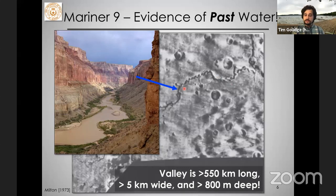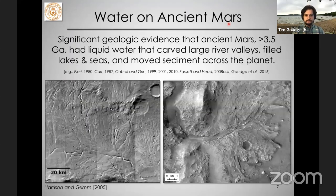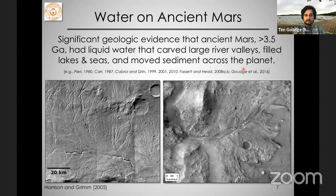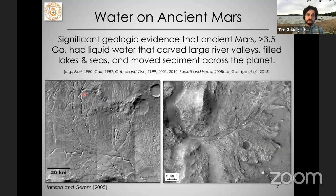There's no water sitting in these valleys now — they're completely dried up. So we know these are evidence of past liquid water, not current liquid water. Since then, we've had significant geologic evidence that ancient Mars, more than three and a half billion years ago, had liquid water on its surface. The geologic evidence includes deeply etched or incised river valleys.